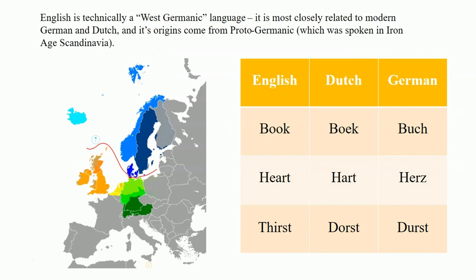English is technically a Germanic language — more specifically, a West Germanic language. It's most closely related to modern German and modern Dutch. Its origins come from Proto-Germanic, spoken in Iron Age Scandinavia. East Germanic languages don't even exist anymore — they would have been spoken by people like the Goths, the Ostrogoths, the Visigoths, the Vandals, etc. Northern Germanic languages include Icelandic, Faroese, Danish, Norse, Swedish, etc.